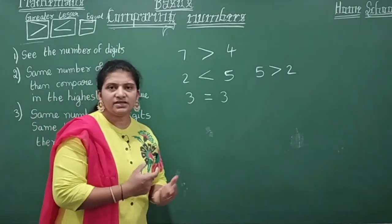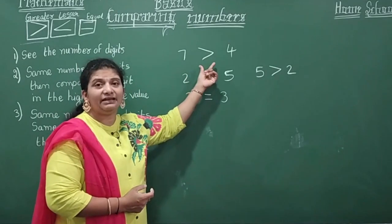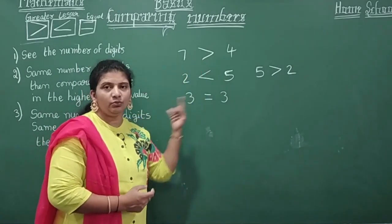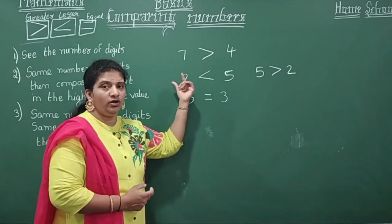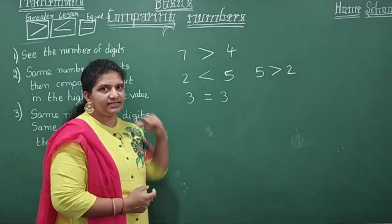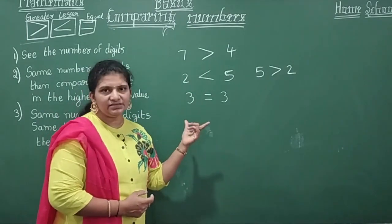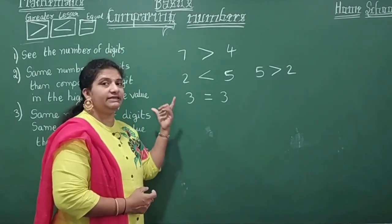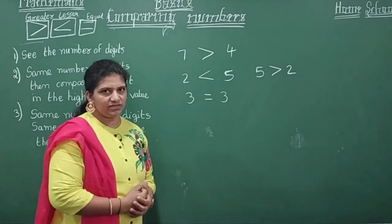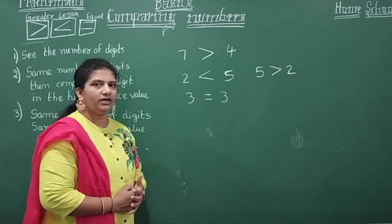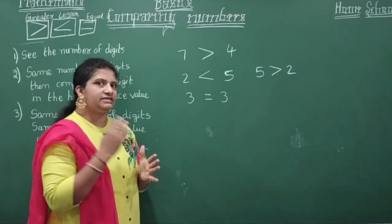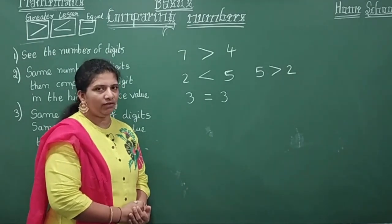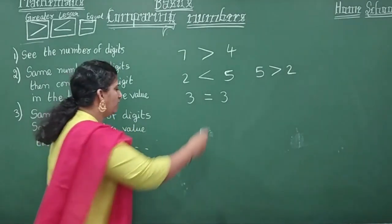So what we are saying here: when you see two numbers, whichever is more, we say it is greater; whichever is less, we say it is lesser. Now, if the number of digits increases, how do you compare? We are going to see that now with two-digit numbers.